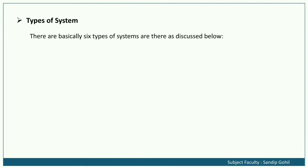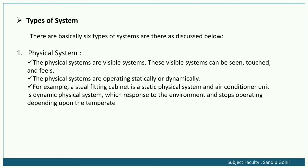Types of systems: There are basically six types of systems discussed below. Physical systems are visible systems. These systems can be seen, touched, and felt. Physical systems can operate statically or dynamically. For example, a steel filing cabinet is a static physical system, and an air conditioning unit is a dynamic physical system which responds to the environment and stops operating depending upon the temperature.